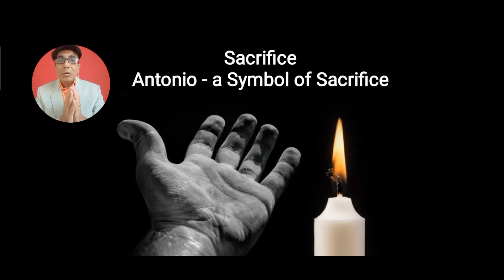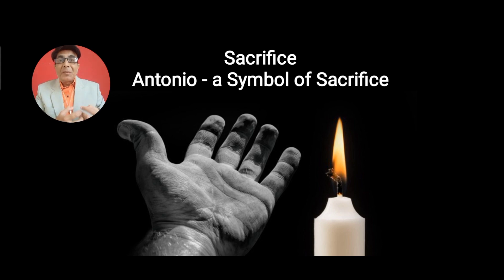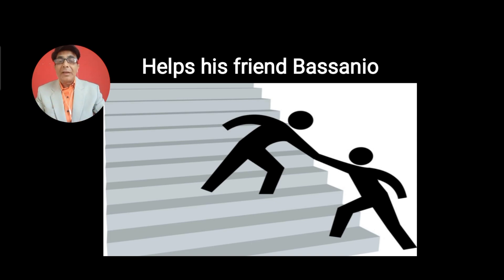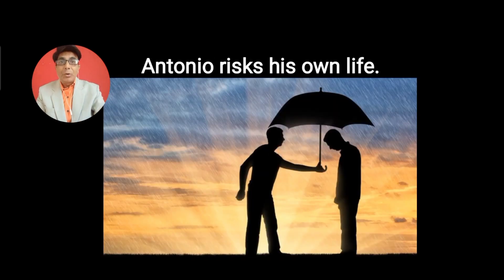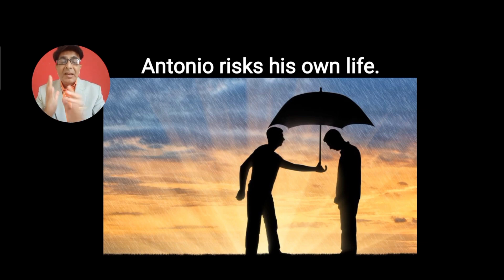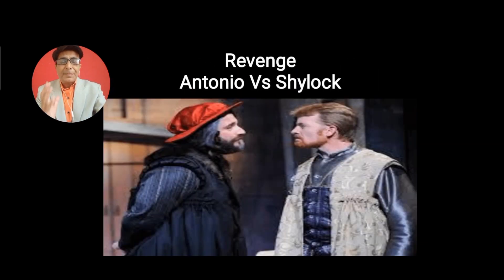Just opposite to Shylock, we have Antonio, who is a symbol of sacrifice. Antonio is like a candle — the candle burns itself in order to give light around it. In the same manner, Antonio risks his own life in order to help his friend Bassanio get married with Portia. So Antonio stands for sacrifice, while Shylock the antagonist stands for self-centeredness.